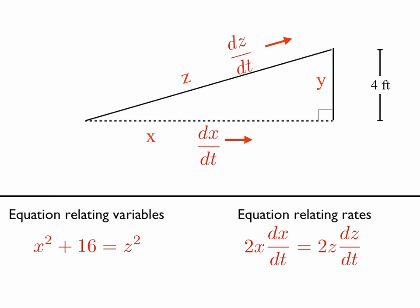So for the x variable, the t is the independent variable and the x is a dependent variable. So every time we take a derivative of an x, we have to make sure we get a dx/dt term. And similarly, for the z, the t is the independent variable and the z is a dependent variable. So when we take derivatives of z, we get a dz/dt. So if we do that, the derivative of x² is 2x, and then we have to take the derivative of the x, which is dx/dt. And that's equal to the derivative of z², which is 2z, and the derivative of z is dz/dt.